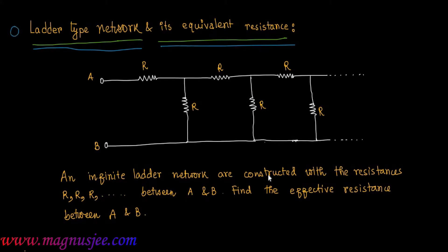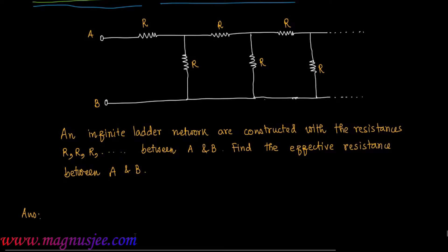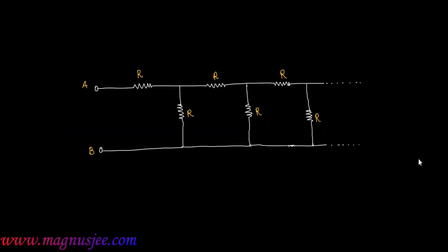In this problem we consider a ladder type network and its equivalent resistance. An infinite ladder network is constructed with resistances R, R, R... between two points A and B. We need to find the effective resistance between A and B. In the diagram, an infinite number of resistances are connected between the two points A and B to form a ladder type network.